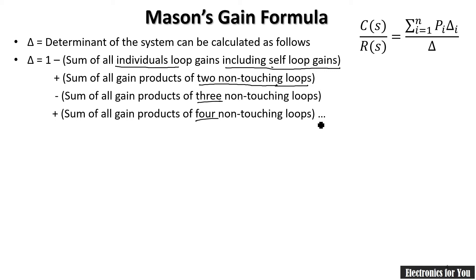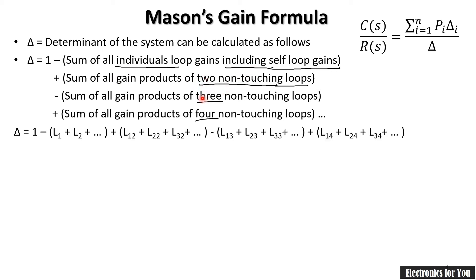The series may continue to five, six non-touching loops, but most of the time there may be three or four non-touching loops for complex problems; sometimes there will be no non-touching loops. The signs alternate: minus, then plus, then minus, then plus, and so on. So the formula is actually straightforward once you identify the loop gains.